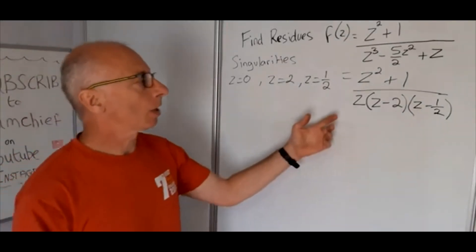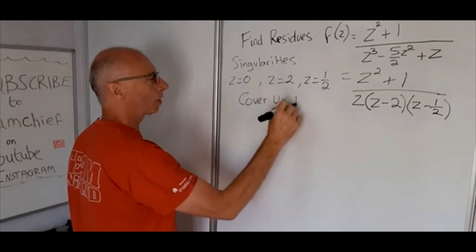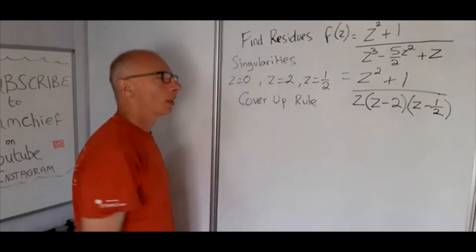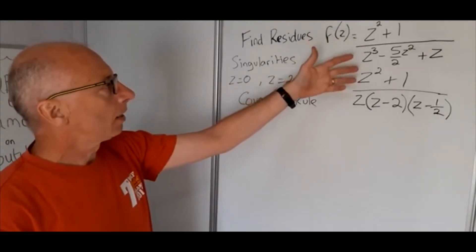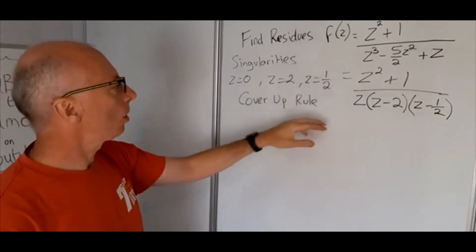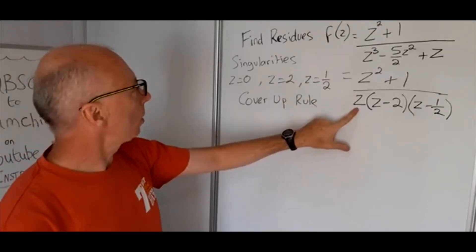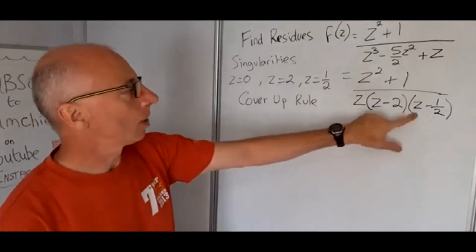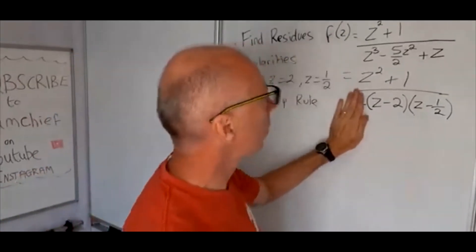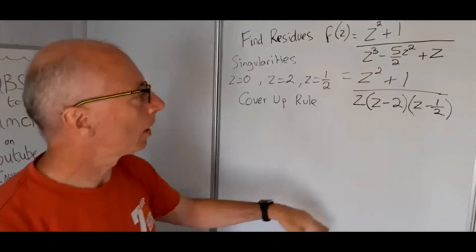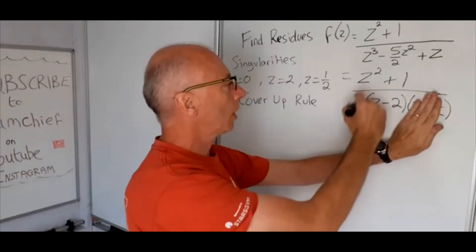Okay, so now what we can do is use something called the cover-up rule. So as this function is analytic on the complex plane and continuous, we can use this cover-up rule. So basically what it means is for each of the singularities in the denominator, for example z equals 0, we just put our hand over that one and then calculate the values of the function that's left behind. Same with this one, and then this one.